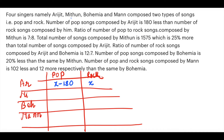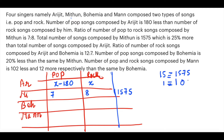The ratio of pop to rock songs composed by Mithun is 7:8. The total number of songs composed by Mithun is 1575. So 7 + 8 = 15 equals 1575, meaning one part equals 105. Therefore pop by Mithun is 7 × 105 = 735, and rock is 8 × 105 = 840.